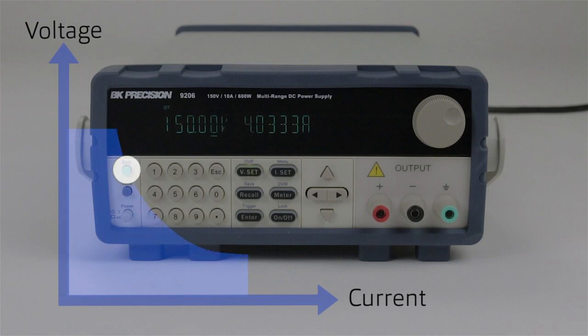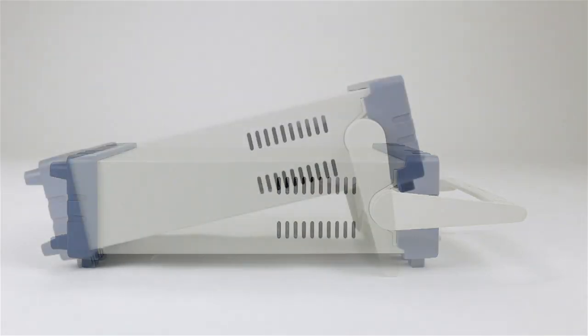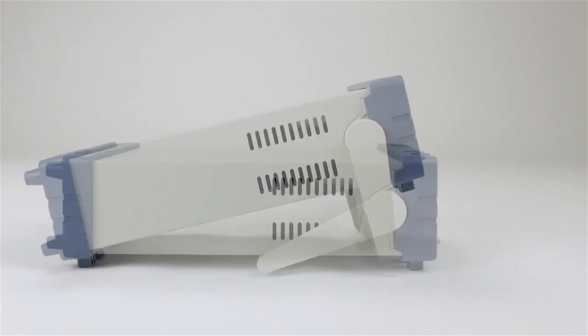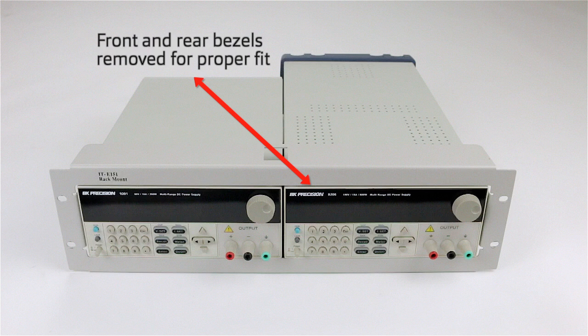We'll provide more details on multi-range later in this introduction. The 9200 series is based on BNK Precision's popular stackable form factor with built-in adjustable carrying handle and can also be rack mounted using the optional kit, allowing for solo or tandem mounting of up to two units.